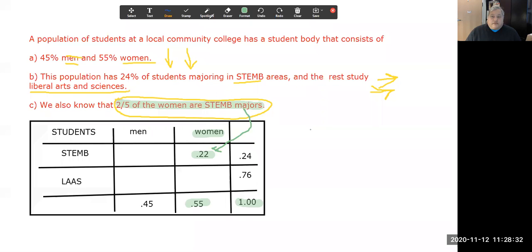Once I have that value, then the remaining values have to comply with the rule of complements. Namely, the percentage of men who study STEMB is 2%, and the percentage of men who don't study STEMB has to be 43%. And last but not least, the percentage of women who are studying liberal arts and other sciences is 33%. Because those three numbers have to be such that they add up or they make up the rest of the story. So 2% plus 22% equals 24%, and 2% plus 43% equals 45%, and 43 plus 33 equals 76%.